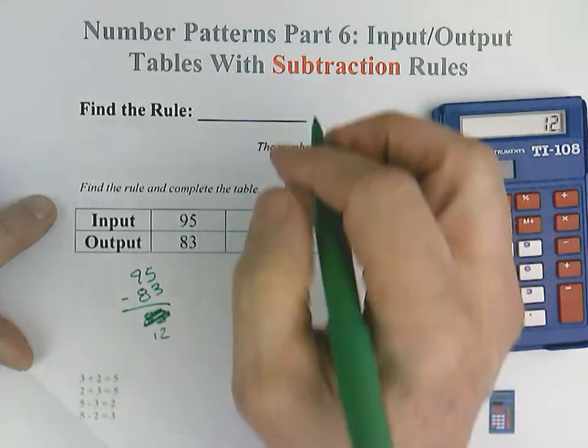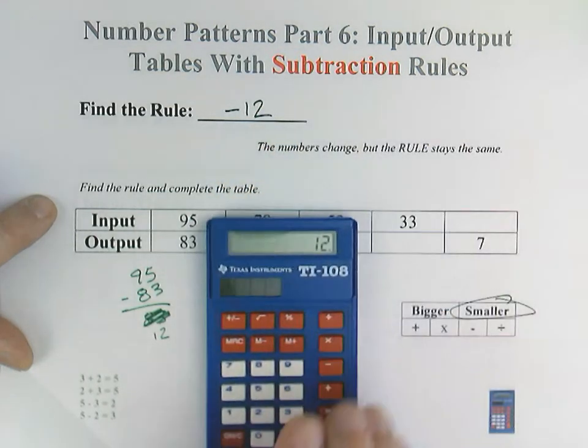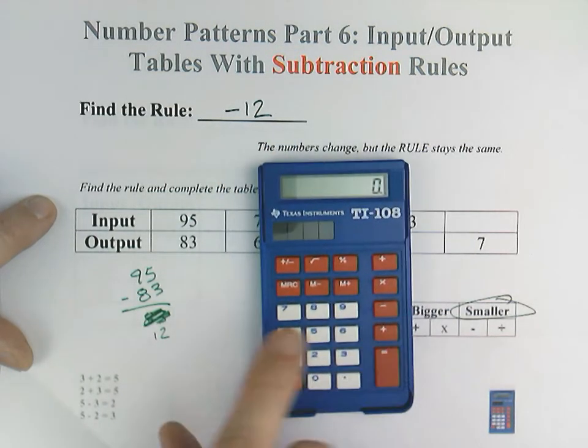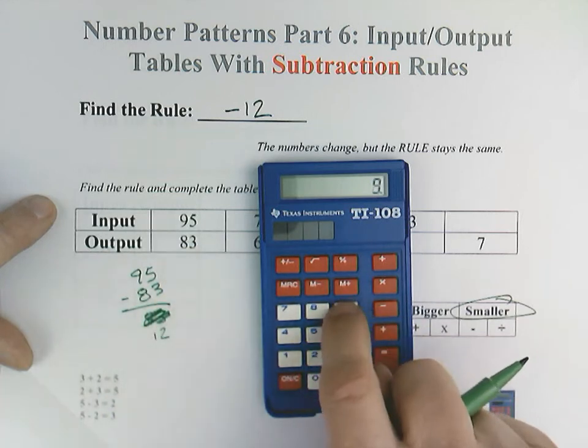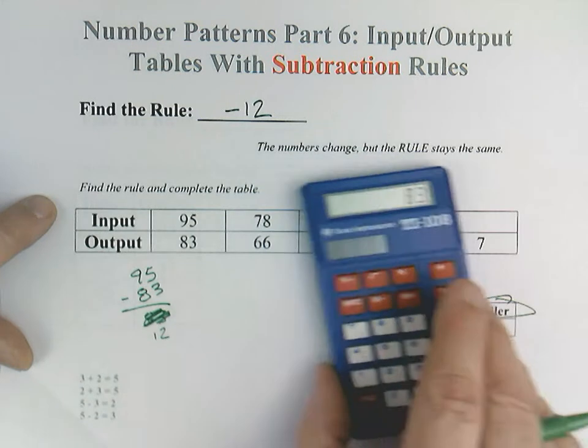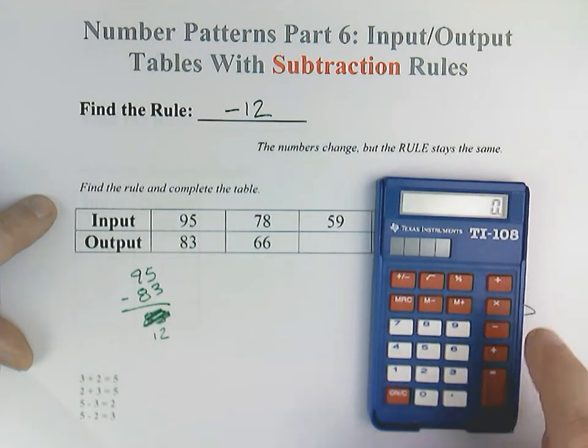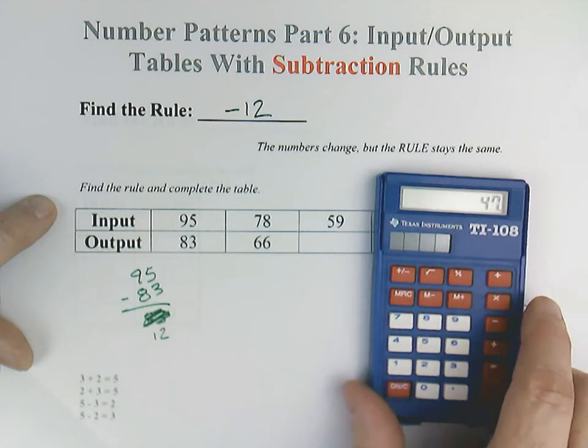95 minus 83 would equal 12. So our rule is going to be a minus 12 rule. I can prove that again with our original problem before we switched it. 95 minus 12 equals 83. All right. So now it's easy, right?